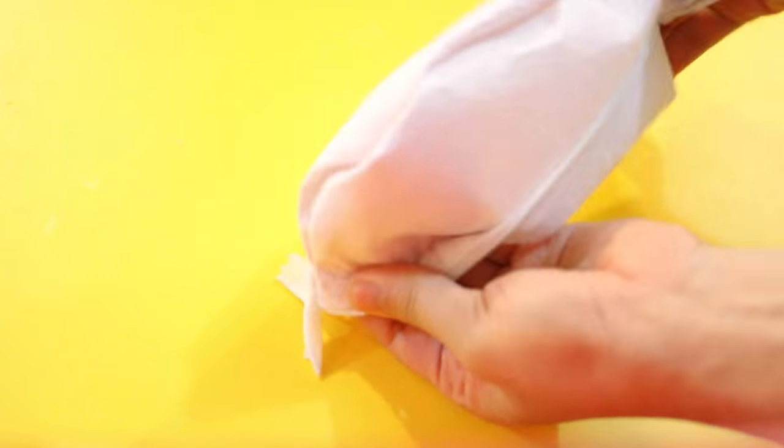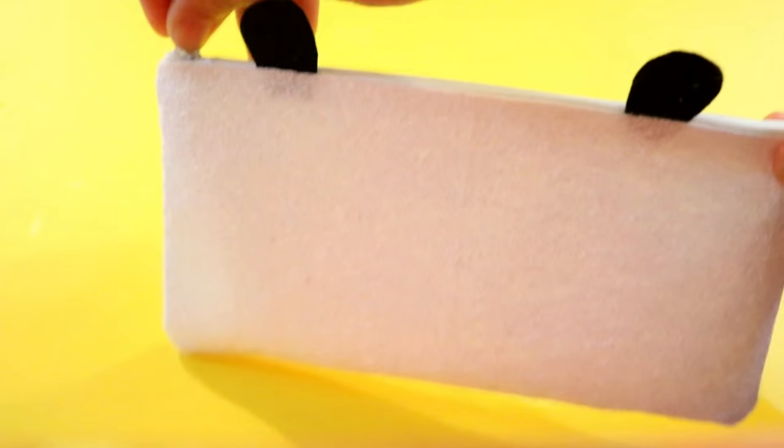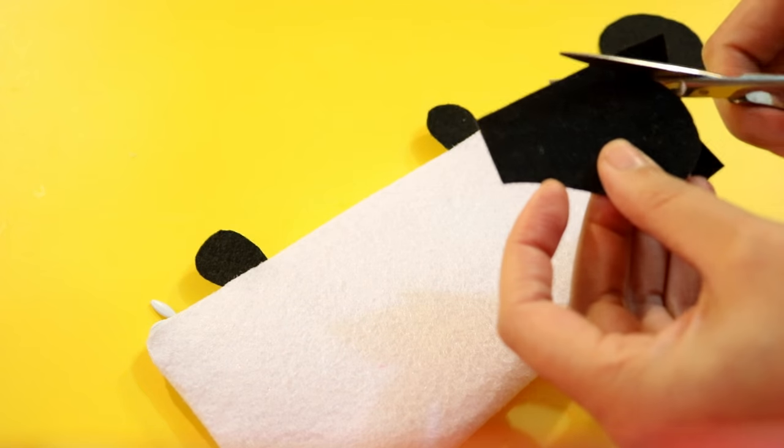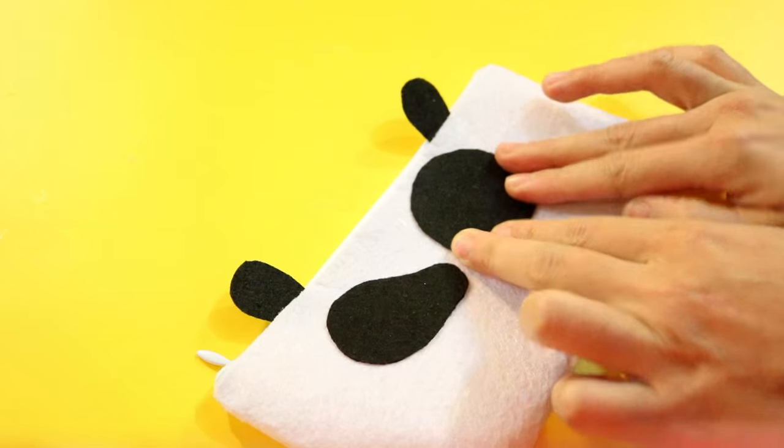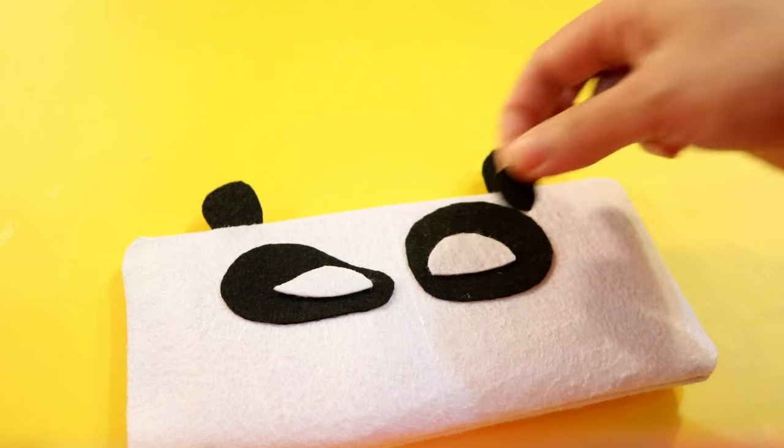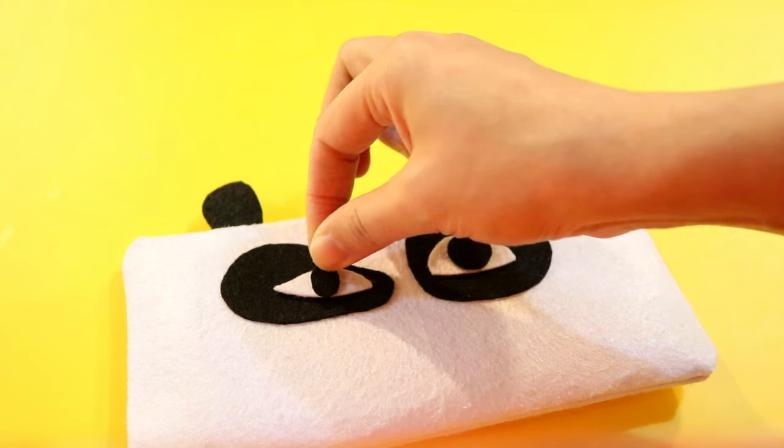Make sure the glue has completely dried before turning your case inside out. To make the face of the panda, cut two eye patches out of black felt, glue them on, then use two pieces of white felt for the eyes. Again, use black felt for the pupils and nose.